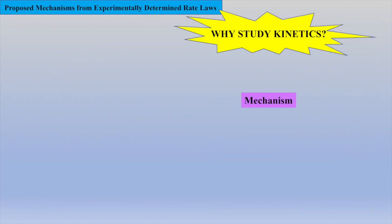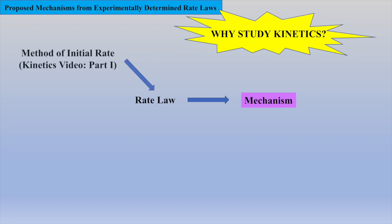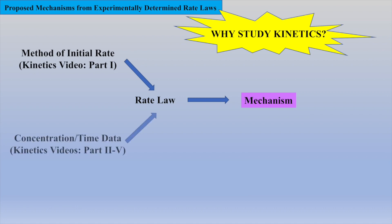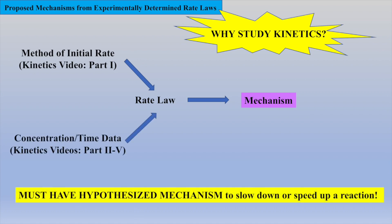Arguably, the most important reason to study kinetics is so a reaction mechanism can be hypothesized from an experimentally determined rate law, which is usually determined one of two ways: via the method of initial rates or the gathering of concentration time data. Thus, to exploit or harness a reaction — in other words, speed it up or slow it down — the experimentalist needs the hypothesized mechanism. Interestingly, a mechanism can only be disproved and never proven.